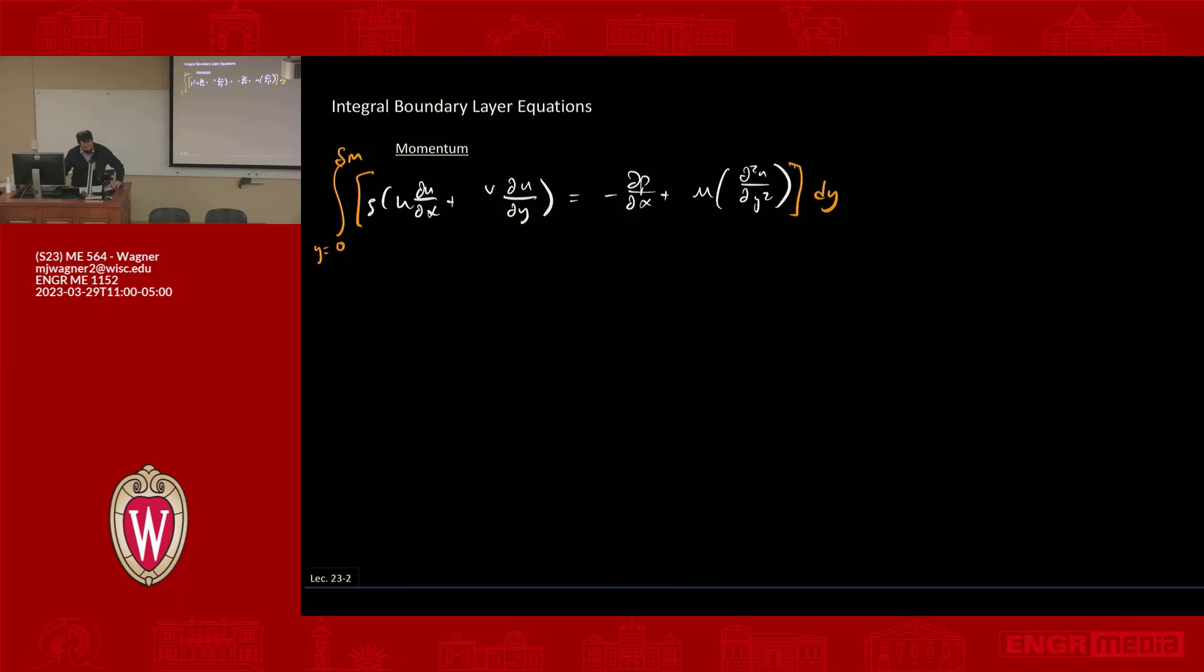But the result is this kind of interesting equation. So the result becomes d dx of the integral from 0 to delta m of u squared minus u times u infinity dy. So that integral with respect to y. So that's the first term. There's four terms here. The second is d u infinity dx times the integral from 0 to delta m of u minus u infinity dy.